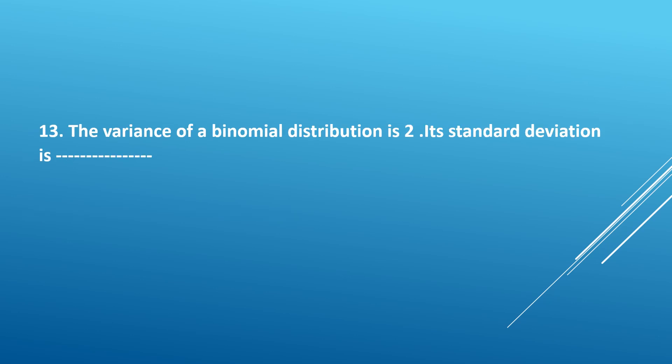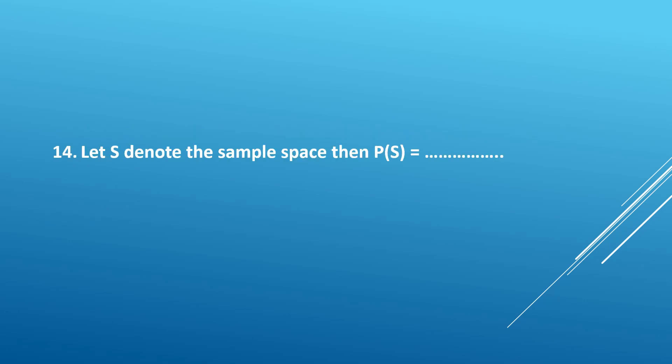Thirteenth question: The variance of a binomial distribution is 2. Its standard deviation is dash. The answer is square root of 2. Fourteenth question: Let S denote the sample space, then P of S is equal to. The answer is 1. Probability of S will be equal to 1.